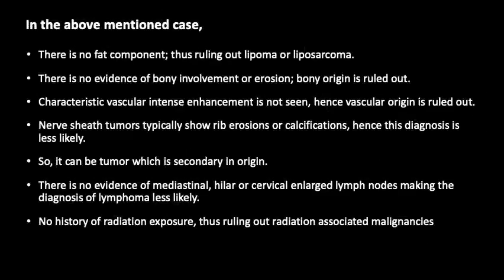In our case, there is no fat component, ruling out lipoma or liposarcoma. There is no bony involvement or erosion, ruling out any bone tumor. There is no characteristic vascular intense enhancement, ruling out vascular origin. Nerve sheath tumors would typically show target sign or calcification, which is not seen here. What remains is secondary origin of tumors — however, the lung appears normal and the tumor appears extra-pleural, ruling out lymphoma or adenocarcinoma of lung. There is also no history of radiation exposure.